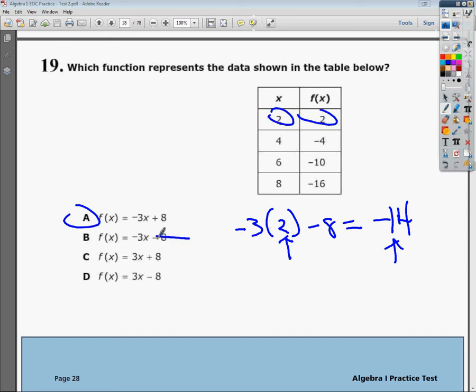So I know that this one is not the correct answer. For the next one, if I did 3 times 2 plus 8, 3 times 2 is 6, plus 8 gives me positive 14. C can't work either.